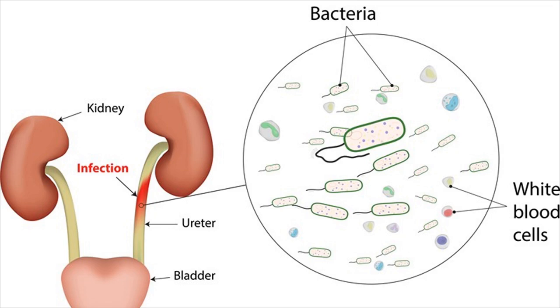Infections of the urethra (urethritis) and the bladder (cystitis) are referred to as lower urinary tract infections. Involvement of the ureters and the kidneys (pyelonephritis) is referred to as upper urinary tract infections.